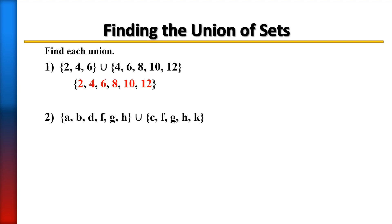Let's look at the second example. We want to find the union of these two sets. So set A contains A, B, D, F, G, H and set B contains C, F, G, H, K.